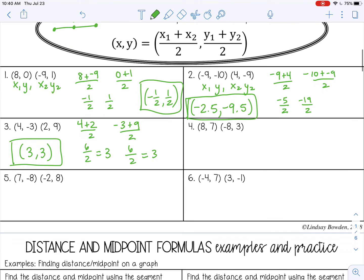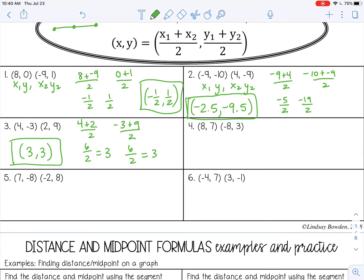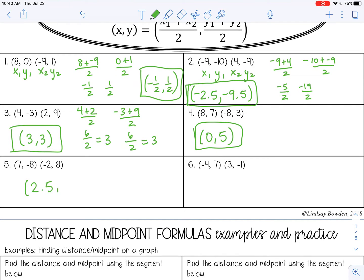Go ahead and pause the video and try 4, 5, and 6 by yourself. So number 4, you should have gotten 0.5. Number 5, you should have gotten 2.5. And then number 6, negative 0.5, 3.